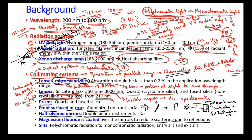Slits convert polychromatic radiation to monochromatic radiation, as already discussed, and there can be two types: entry slit and exit slit. An important point is that whatever glasses are used — lenses, mirrors, or slits — the absorption should be less than 0.2% in the application wavelength range, meaning these must be very high-quality glasses.